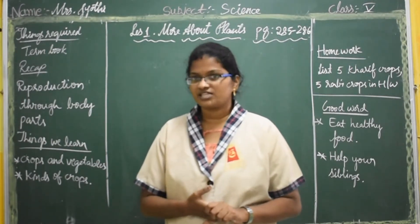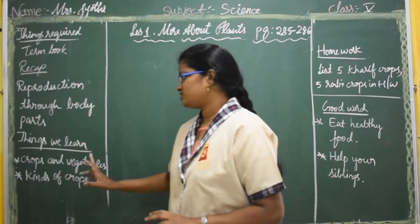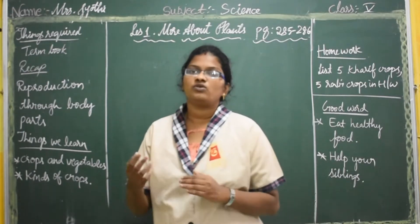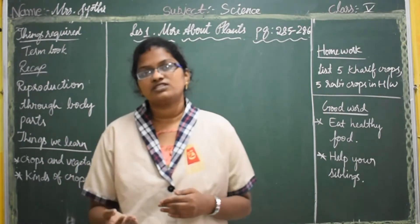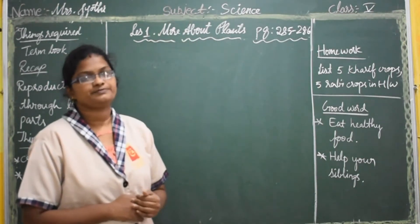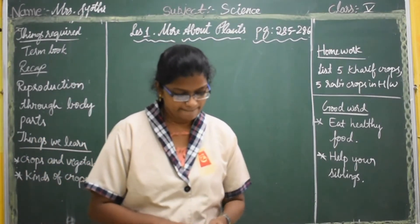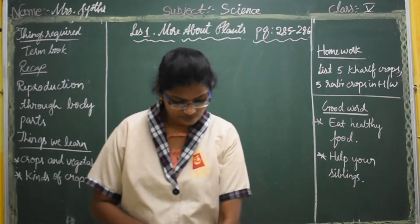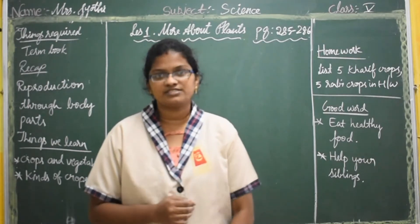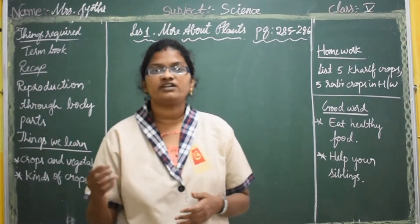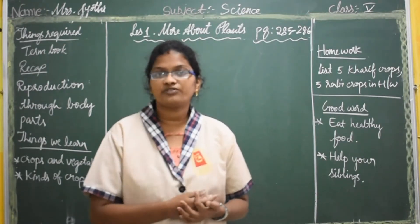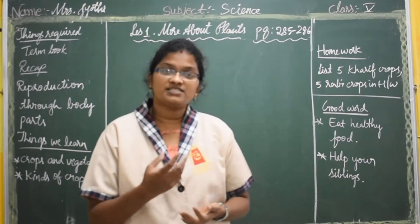We discussed these in the previous lesson. Today we are going to learn about crops and vegetables — the different kinds of crops and different vegetables, and the types of crops which grow according to the season and based on the soil. Now open page number 285. In the previous lesson we learned about reproduction through stem. The best examples are potato, onion, ginger, rose, hibiscus, and bougainvillea. Bougainvillea is the plant with pink, white, and orange colored flowers. These are the examples of stem cutting.